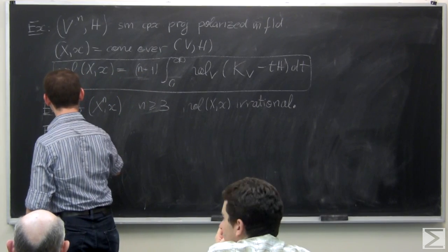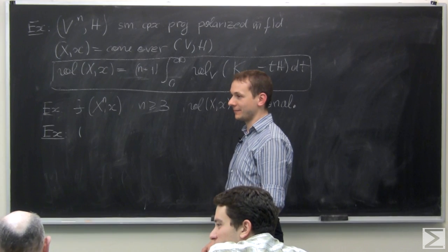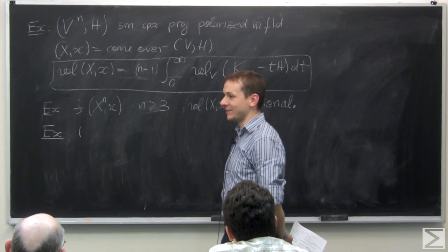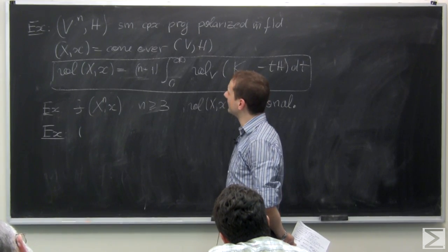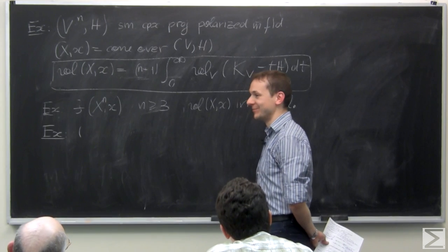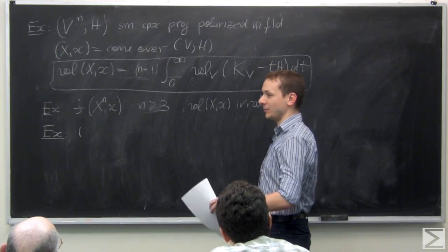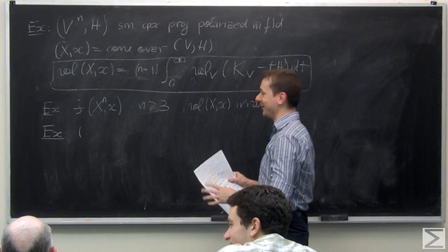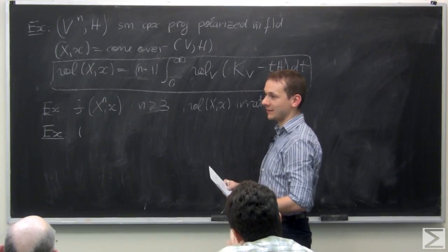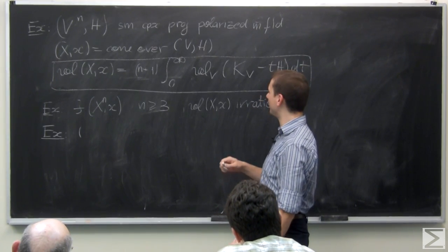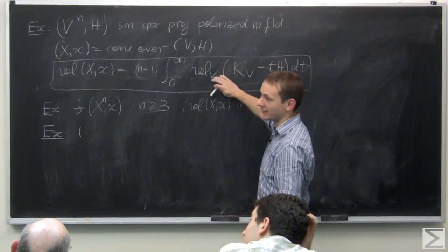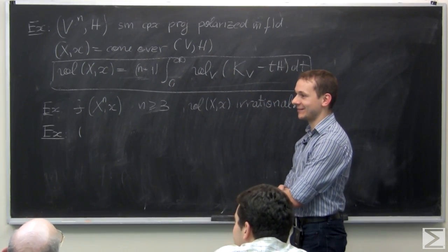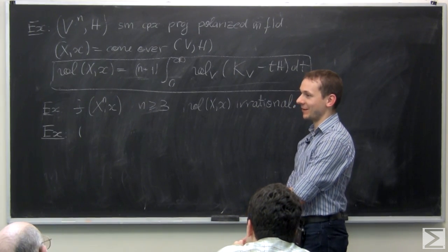Can you realize any given real number as a local volume for some singularity? I'm not sure. For projective varieties, the set of volumes is known to be countable — you can get any rational number and some transcendentals, but the set of all of them is countable. If you get a number via the cone construction and replace the polarization by 2H, you divide the volume by 2^n. For volumes on projective varieties, Kutkowski also takes advantage of this integral formula — he gets a quadratic irrationality by considering a round effective cone on E × E.